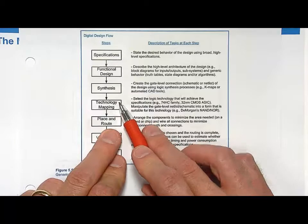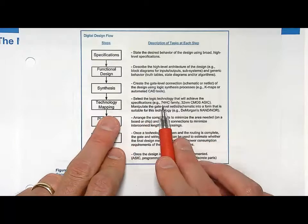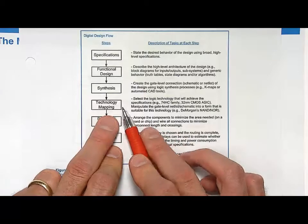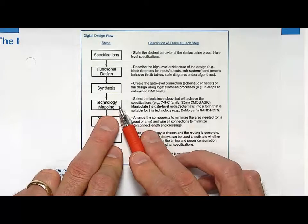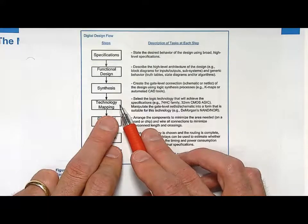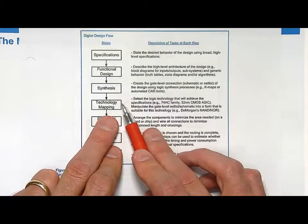Once you have those, what's neat at this step is that once you have the technology you can actually start getting an idea of the delay through the circuitry. Whatever transistor technology you choose for your AND gate, it's going to have a certain delay. So you can get a first stab at how long the gate delay is going to be.